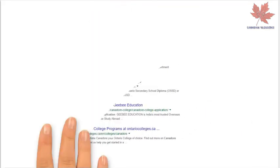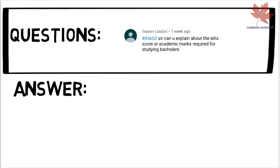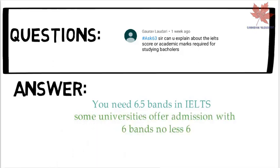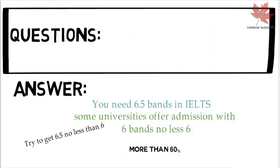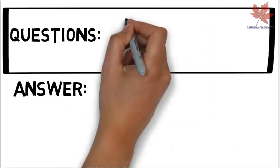The next question is from Gaurav: can you explain the IELTS score and academic marks required for starting a bachelor's? You need 6.5 bands in IELTS — that's the best score to aim for. Some universities offer admission with 6 bands, but no less than 6. I recommend you get 6.5 bands with no less than 6 in each module, and your marks should be more than 60 percent — that's a great profile.